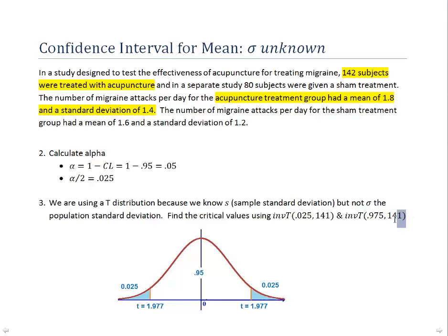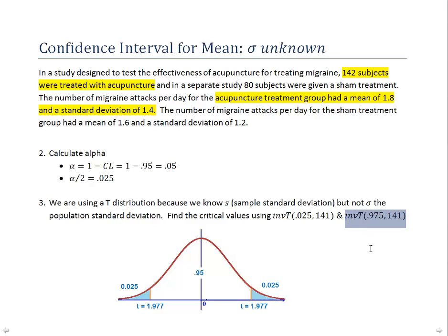If you have a TI-84 calculator, it includes an inverse T function, very similar to the inverse normal function. To calculate the left critical value, use inverse T with 0.025 area to the left and 141 degrees of freedom. For the right critical value, use inverse T with 0.975 area to the left and 141 degrees of freedom. This gives us critical values of negative 1.977 and positive 1.977.